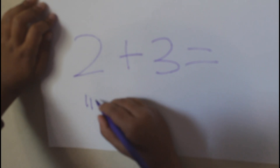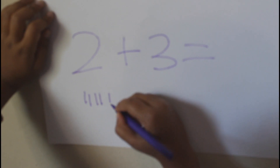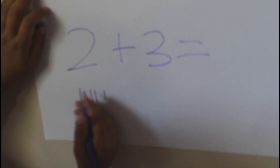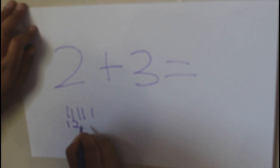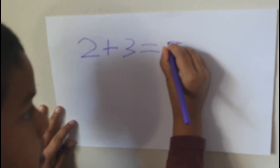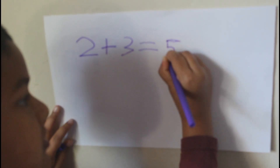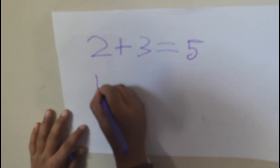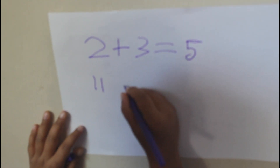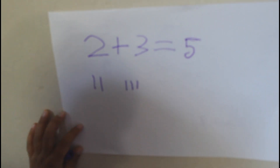We'll have two first and three more. One, two, two, three. What is that? One, two, three, four, five. Five.